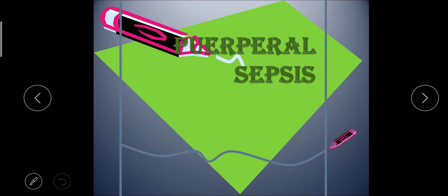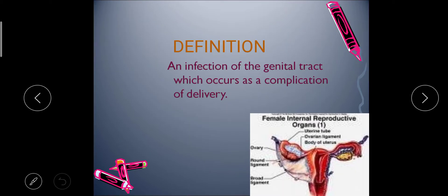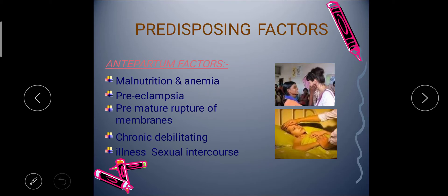Our first complication of puerperium is puerperal sepsis — it means infection during the puerperium. The definition: an infection of the genital tract which occurs as a complication of delivery is called puerperal sepsis. So if there is any infection in the genital tract occurring as a complication of delivery — for example, if proper safety measures were not followed before or during delivery — that is called puerperal sepsis. Next we have predisposing factors, or risk factors.